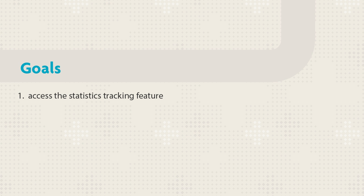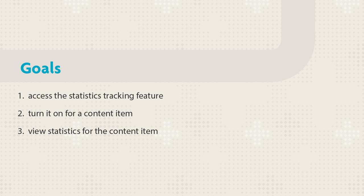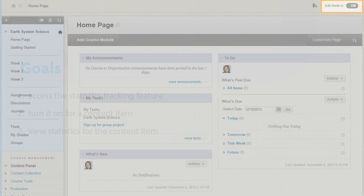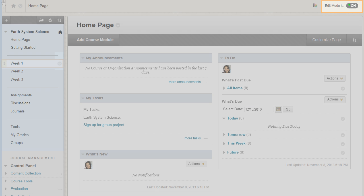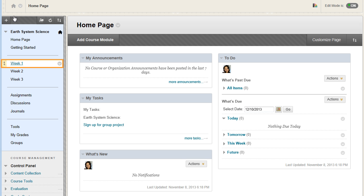This tutorial will show you how to access statistics tracking, turn it on for a content item, and view the statistics report. To begin, change edit mode to on and access a content area.